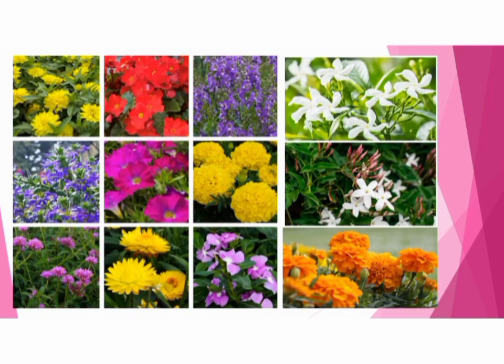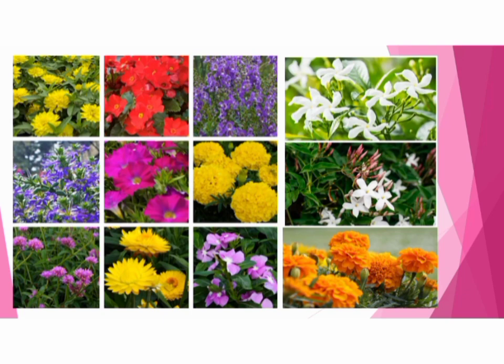Flowers are the most beautiful part of a flowering plant. They are also different in size, shape and color. Fruits are very tasty, aren't they? Fruits and seeds are also different from each other in color, shape and size. You saw that parts of the plants are also different from each other.